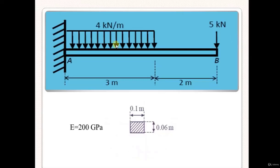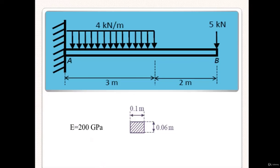Problem statement: This is a cantilever beam loaded by a point load of 5 kN at the free end, and also having a UDL of 4 kN per meter. The length of the beam has a total 5 meter span. The cross section is rectangular with dimensions 0.1 meter by 0.06 meter, and the value of E is 200 GPa. Since ANSYS Mechanical APDL is unitless software, we need to define all data in the same unit form. We are defining forces in kN and length in meters, so we convert E to 200×10⁶ kN per meter square.